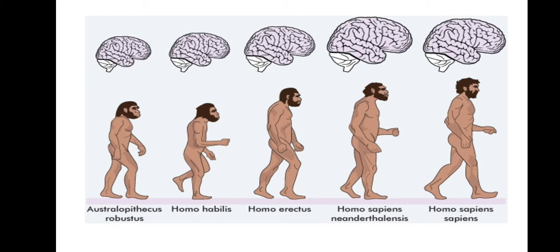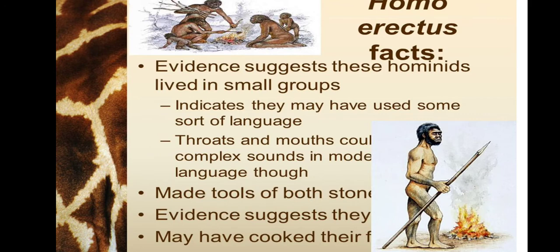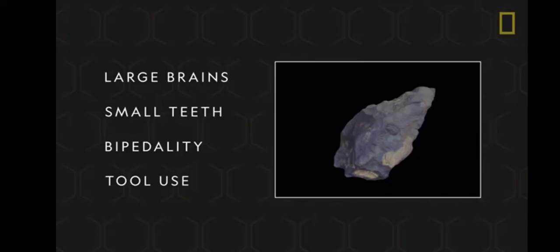Some facts about Homo erectus: evidence suggests these hominids lived in small groups. It indicates that they may have used a short form of language — they must have used a particular language, but had not developed specific words. Their throats and mouths could produce complex sounds. These are evidences that show Homo erectus were more intelligent compared to Homo habilis.